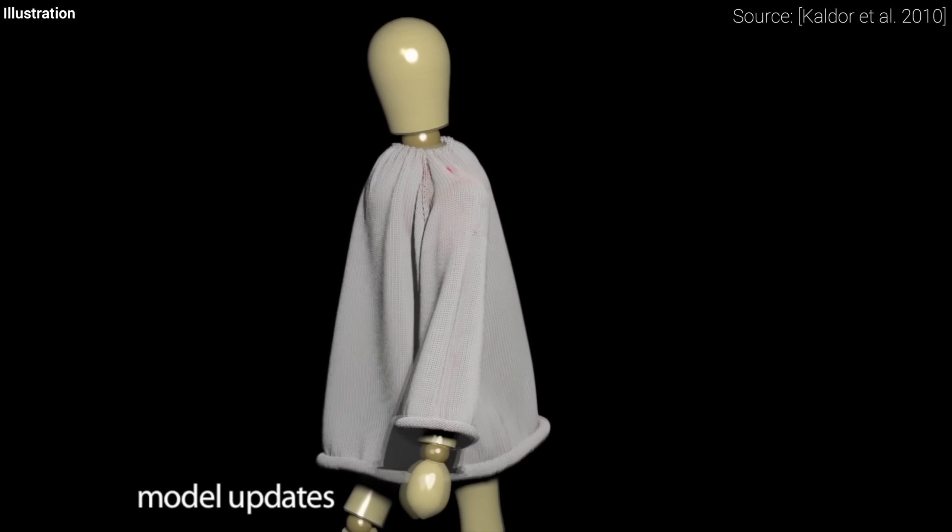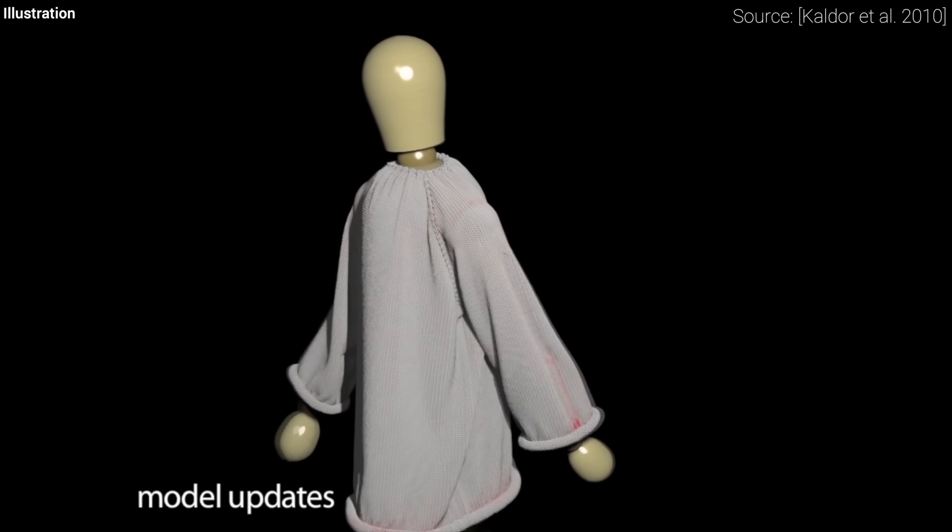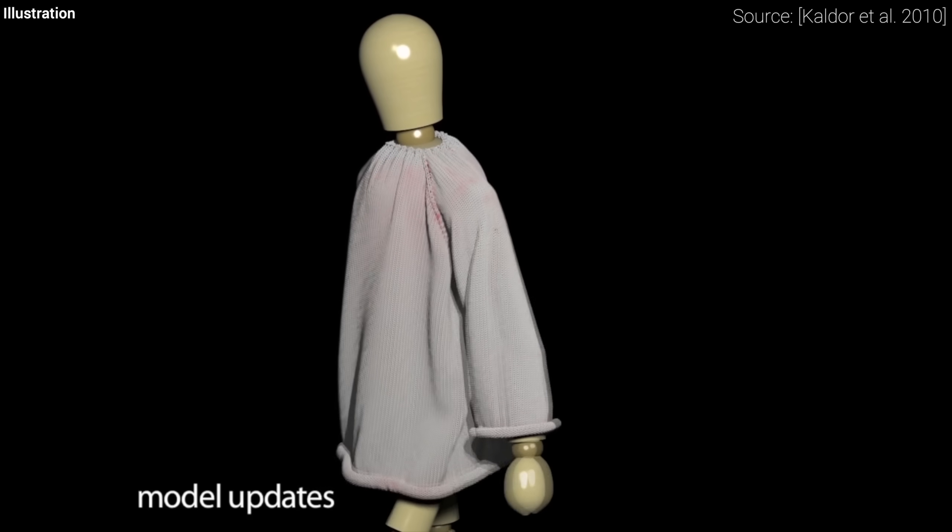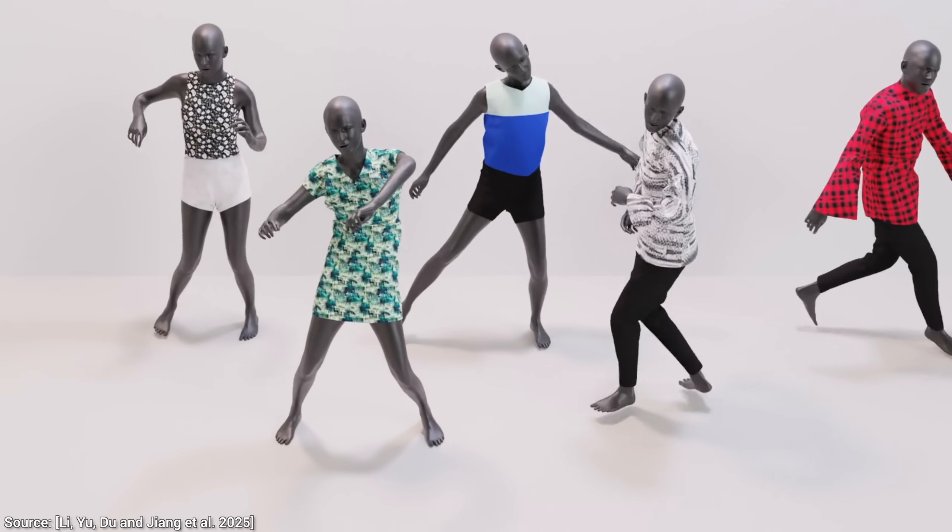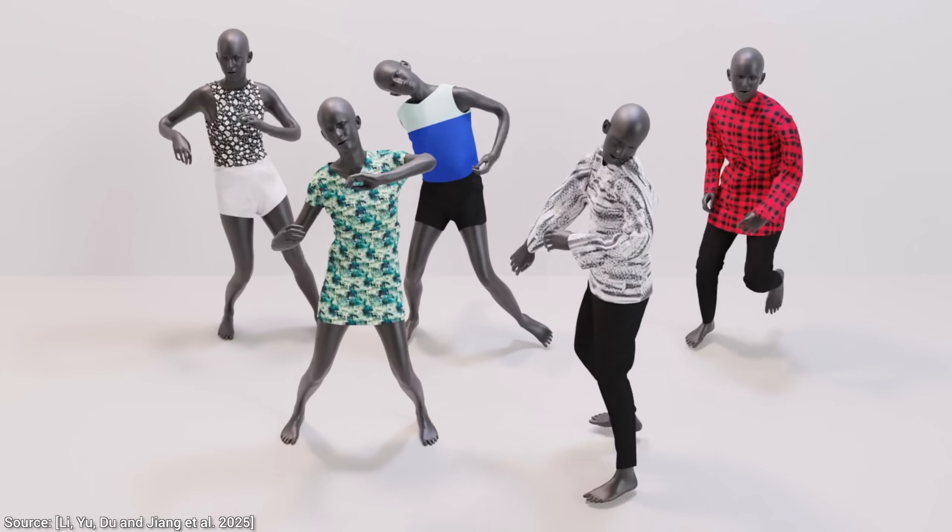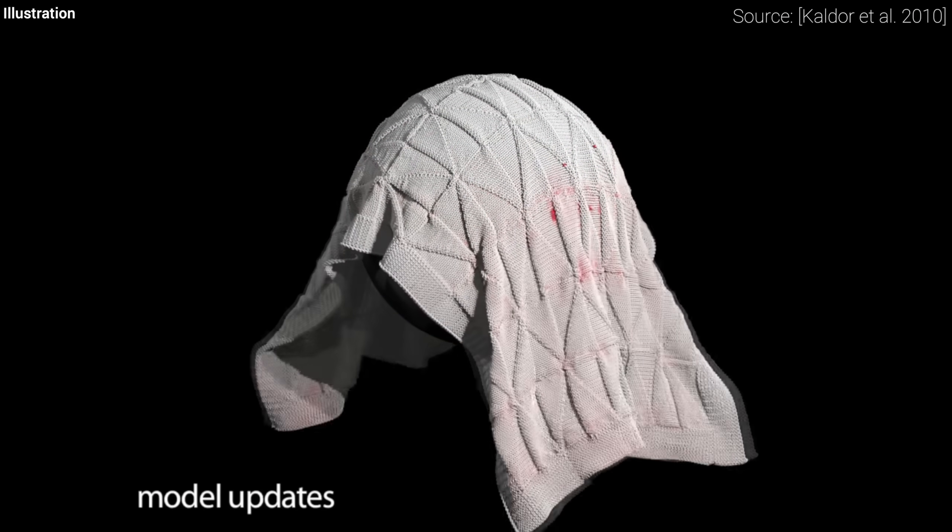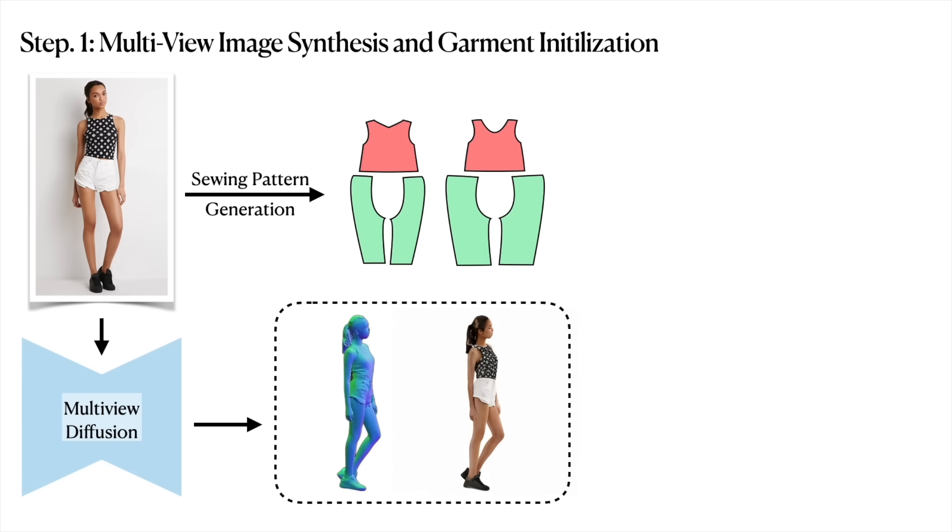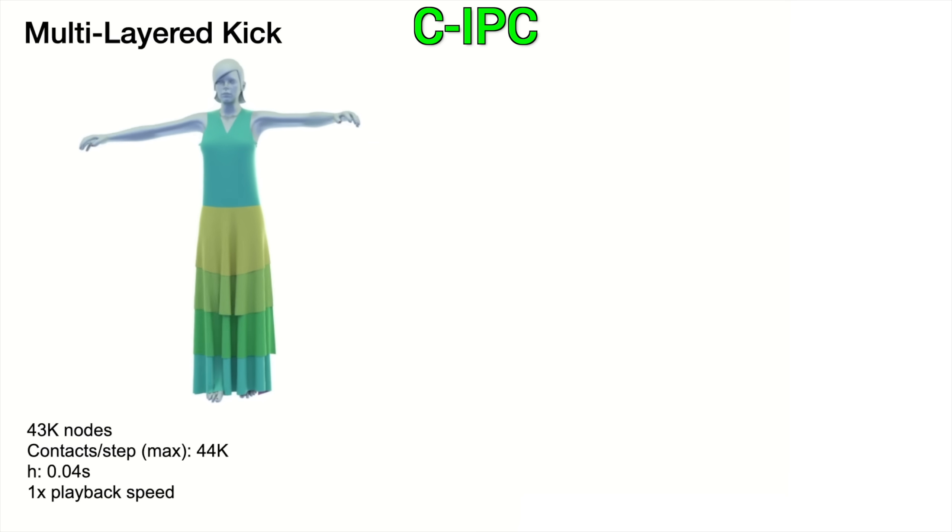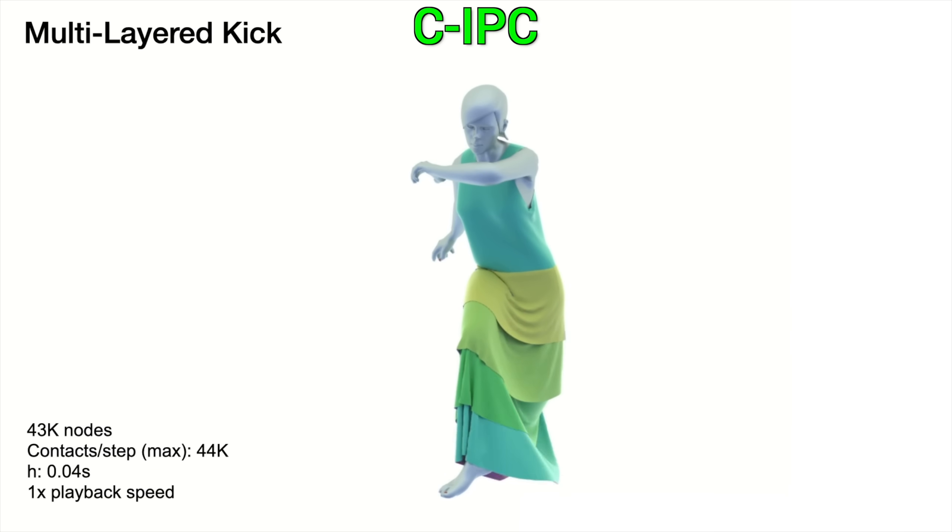And this is not fake physics, it is fully differentiable. That means the AI can feel how wrong it is, and learn which way to pull or stretch each seam to fix it. Imagine the tailor not just seeing the mistake, but feeling the tug on the fabric and adjusting instantly. Wow! So, the AI part, multi-view diffusion, tells the system what it should look like, and the human ingenuity part, CIPC, tells it how it should behave in the real world.